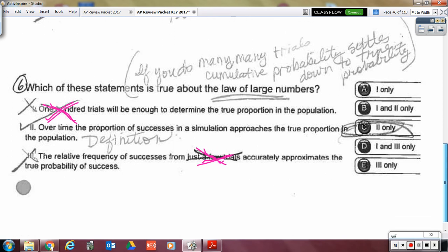Okay, next. This one's the law of large numbers. So if you do many, many, many trials, the cumulative probability will settle down to the true probability, the law of large numbers. So 100 times is not many, many, many trials, like infinity trials. And then just a few is not enough. So over time, the proportion of successes approaches the true proportion. So two is good. That's the definition of the law of large numbers.